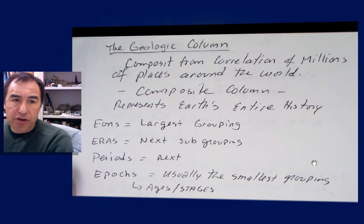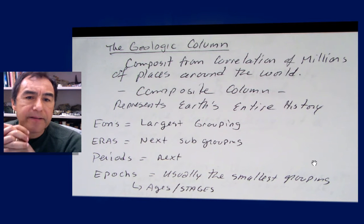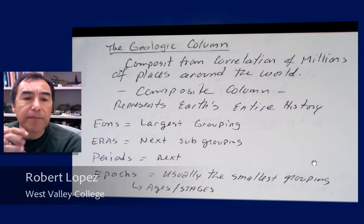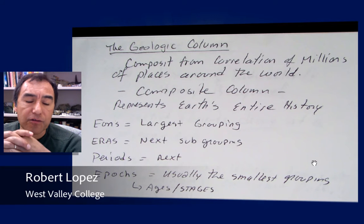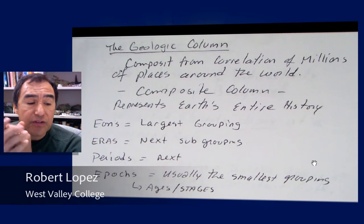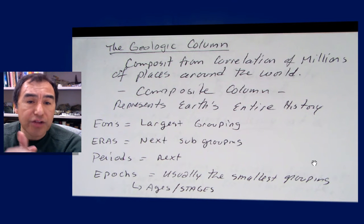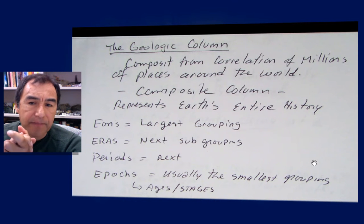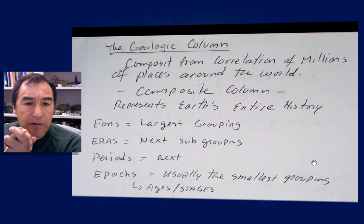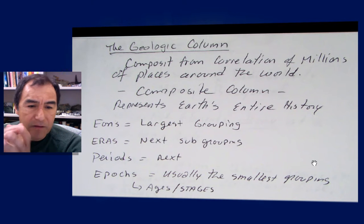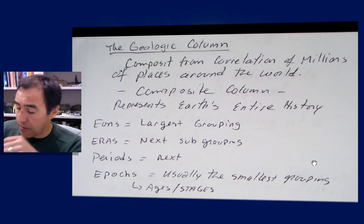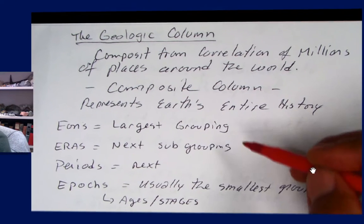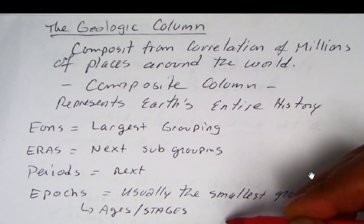Let's look at the geologic column. It's a composite from correlation of millions of places around the world. We're correlating all around the world and we can decipher the data to create one geologic composite column, and it represents Earth's entire history. We're going to look at these eons, eras, periods, epochs, and then ages and stages, which are the smallest grouping of time — going from largest groupings to smallest groupings.